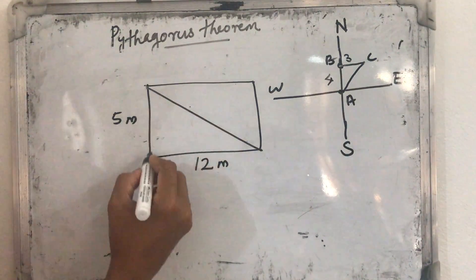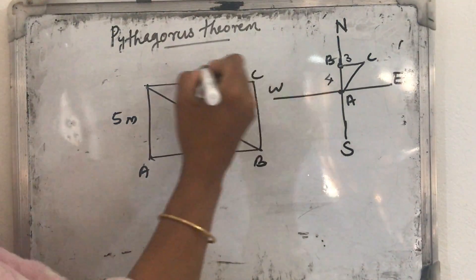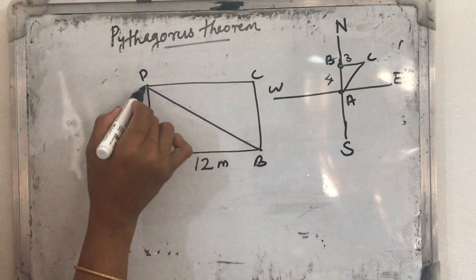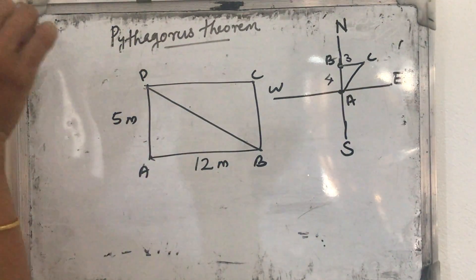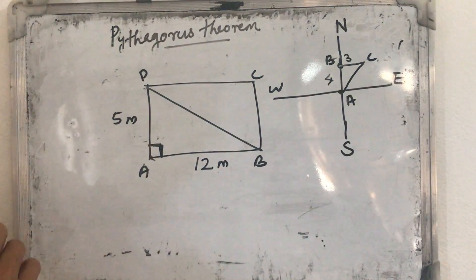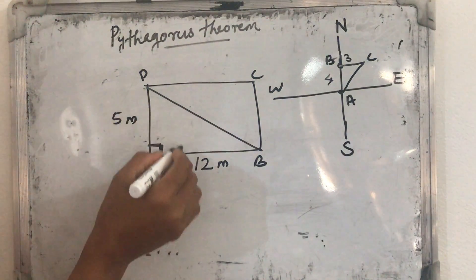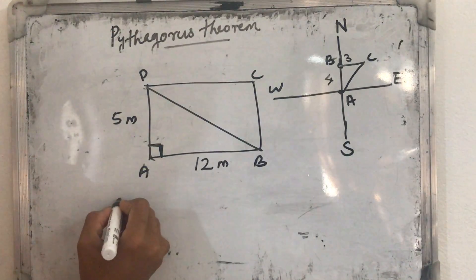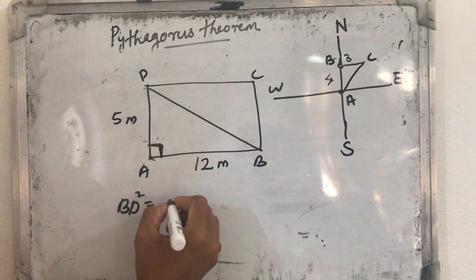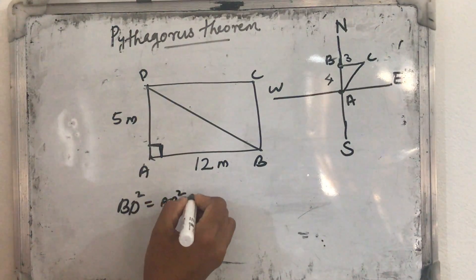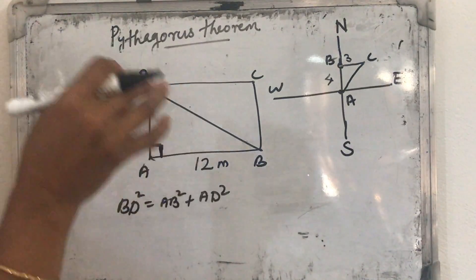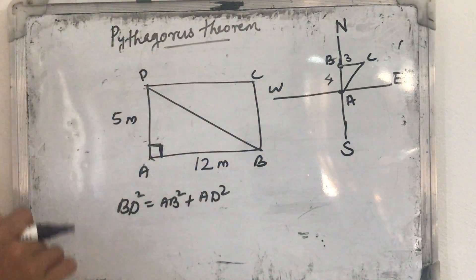If the name of this rectangle is ABCD, we want to find out the length of BD. For a rectangle, this angle is 90 degrees, so we can apply the Pythagoras theorem. BD will be the hypotenuse, so BD² = AB² + AD². Using that, we can find out the diagonal length BD.